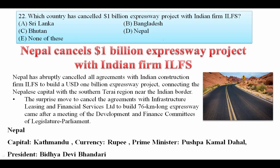Which country cancelled a $1 billion expressway project by Indian firm IL&FS? Nepal cancelled all agreements with Indian construction firm IL&FS to build a $1 billion expressway connecting Nepal's capital with the southern Terai region near the Indian border. The answer is Nepal. The capital of Nepal is Kathmandu, the currency is Rupee, PM is Pushpa Kamal Dahal, and President is Bidhya Devi Bhandari.